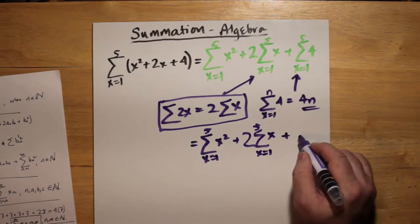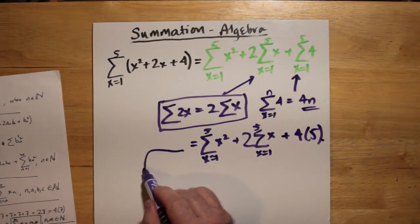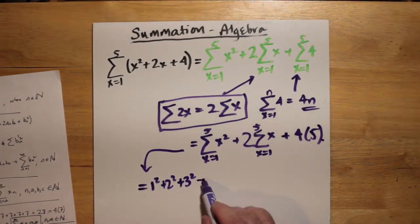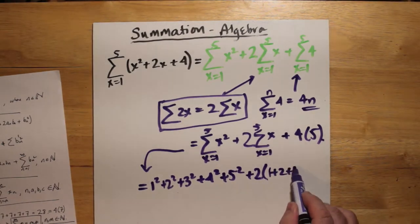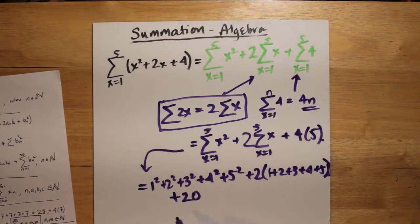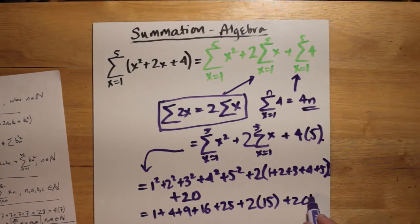2 times 1 plus 2 plus 3 plus 4 plus 5 is 2 times 15, which becomes 30. 30 and 20 is 50. The other numbers add up to 55 and we add 55 and 50, we get 105.